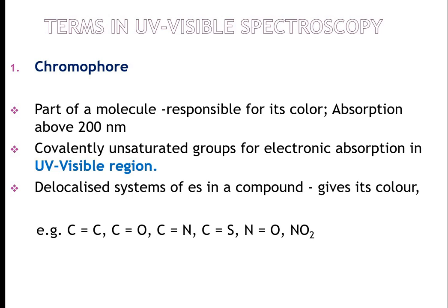Some important terms used in UV visible spectroscopy include chromophore, auxochrome, and spectral shifts. Chromophores are the part of a molecule responsible for its color; they absorb above 200 nanometers and include covalently unsaturated groups like carbon-carbon double bonds, carbonyl groups, nitriles, and nitro groups. Auxochromes increase the intensity of absorption; they are saturated compounds with non-bonded lone pair electrons that, when attached to a chromophore, increase both the wavelength and intensity of absorption.